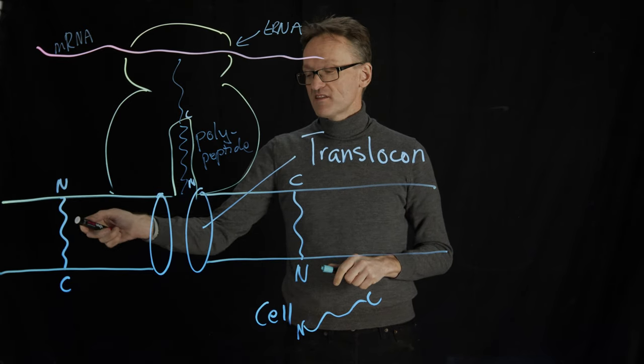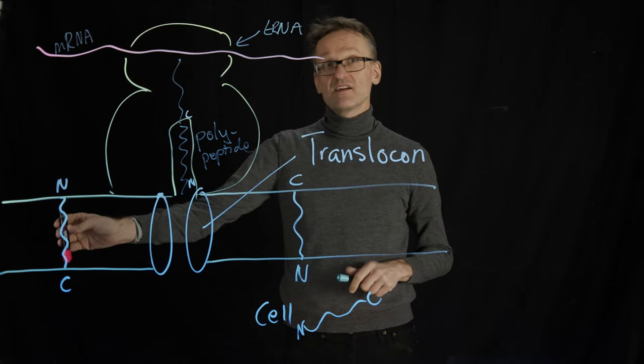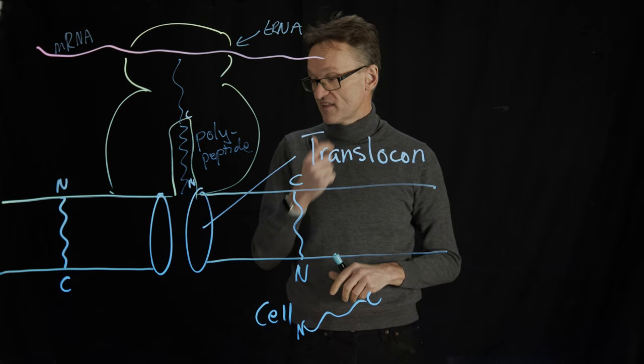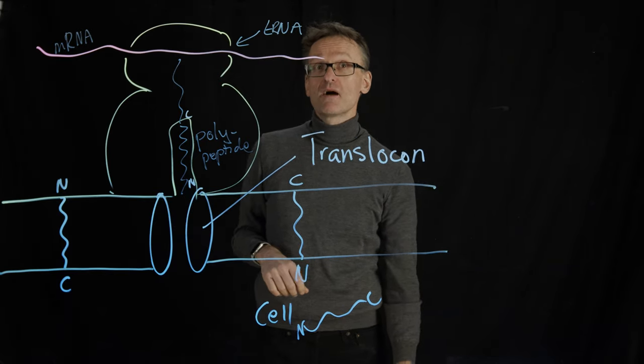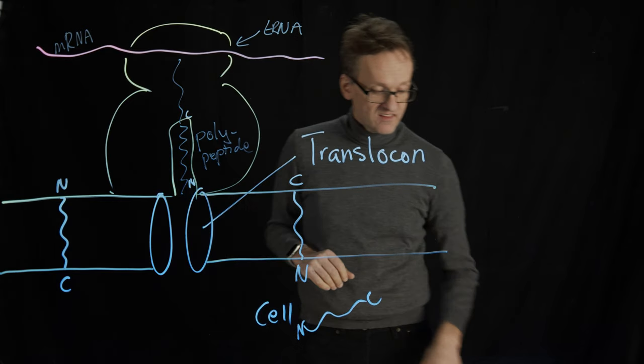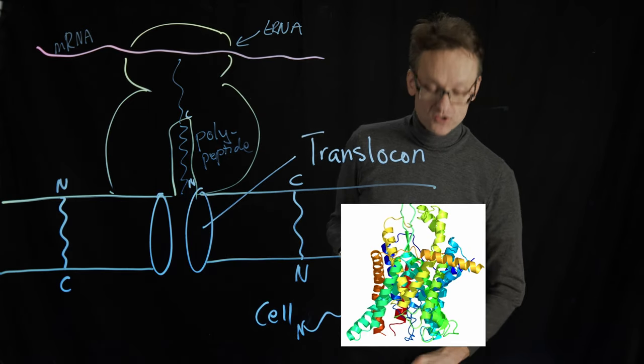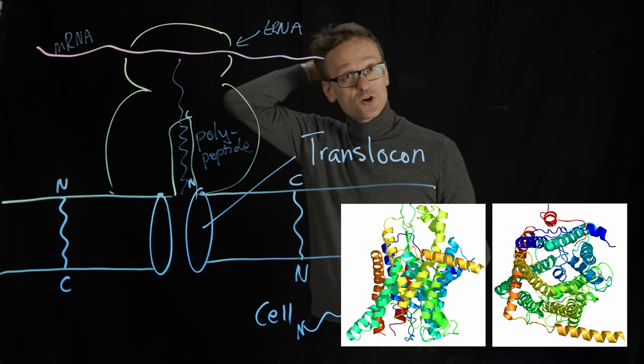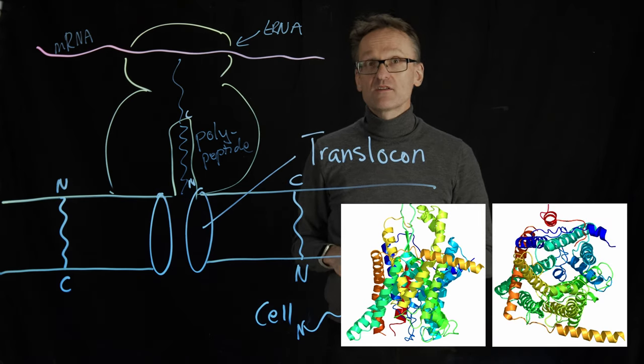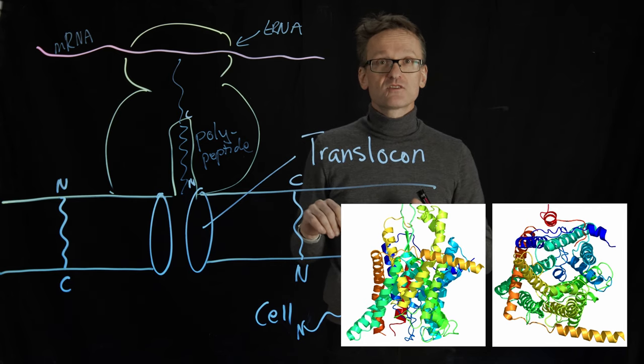What determines whether they end up out in the cell or in here is how hydrophobic they are. And that is because this translocon is not just a boring barrel. It has doors. The easiest way to show you that might be to show you the structure. I'll show you two structures. This was determined by Tom Rapoport and Vandenberg in particular some 20 years ago almost.